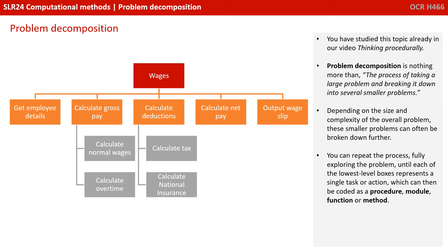Depending on the size and complexity of the overall problem, these smaller problems can often be broken down further. You can repeat this process, fully exploring the problem until each of the lowest level boxes represents a single task or action, which you could then code up as a procedure, module, function, or method, for example.